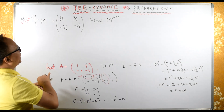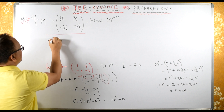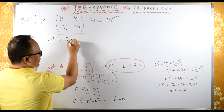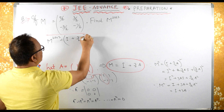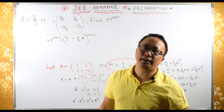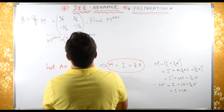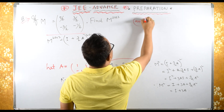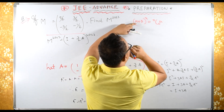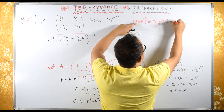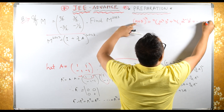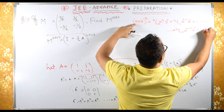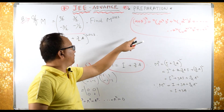Now we have M squared. So M raised to 2023 equals — remember we have the binomial theorem: (A + B) raised to N equals N·C0·A^N·B^0 plus N·C1·A^(N−1)·B^1, and the general term is N·Cr·A^(N−r)·B^r, and the last term is B^N. Let's apply this formula to (I + (3/2)A) raised to 2023.